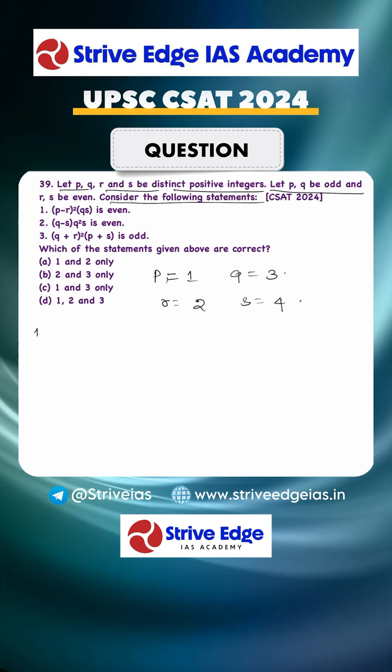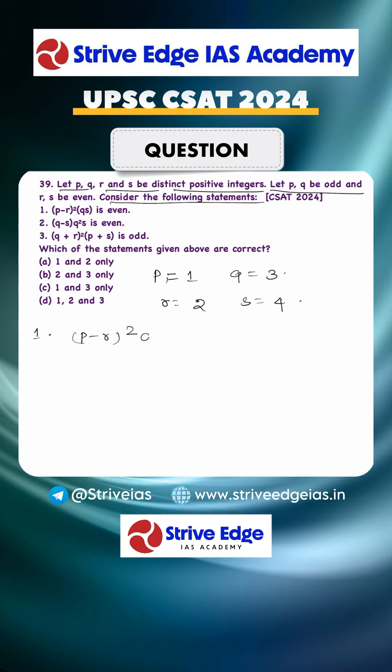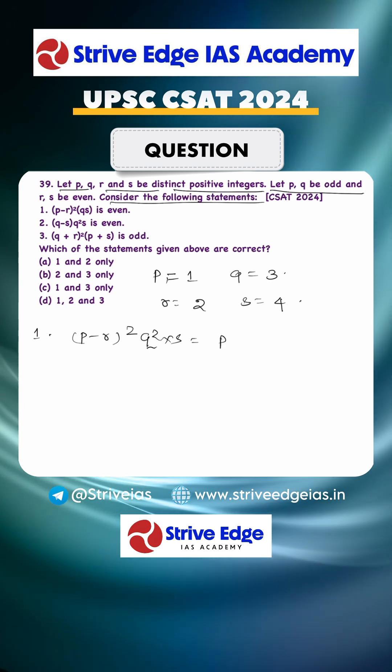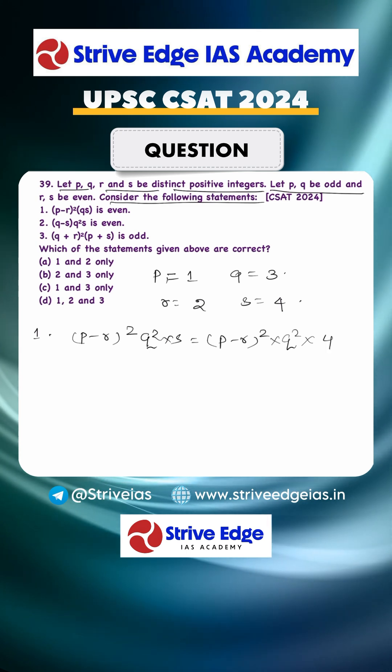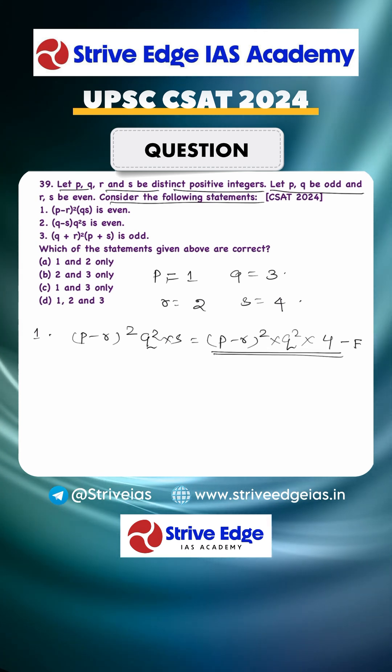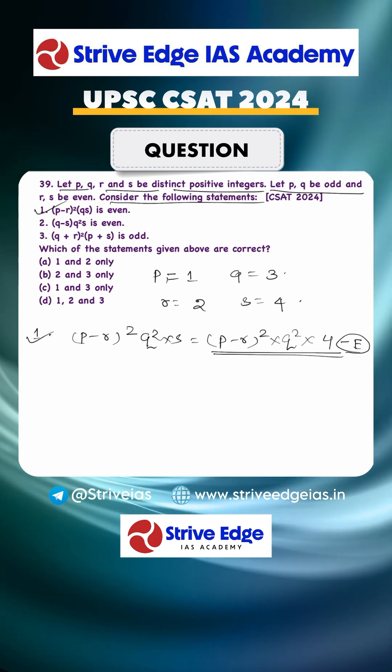We will have to check one by one condition. It is given (P minus R) square into Q square into S. Just put the value, Q square, and we know that S is 4. When anything is multiplied by even, it is even. So whole number became even. So first one is right. Option one is right.